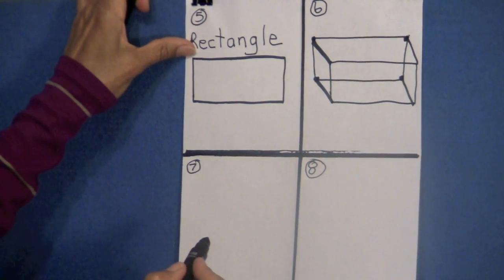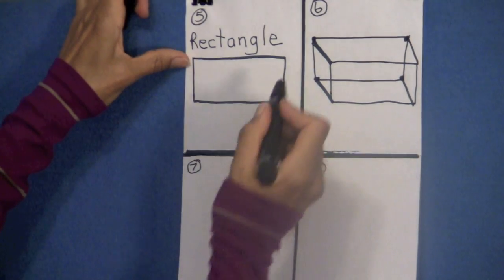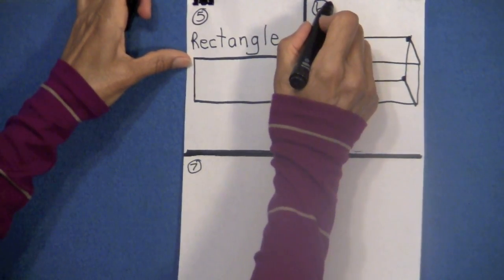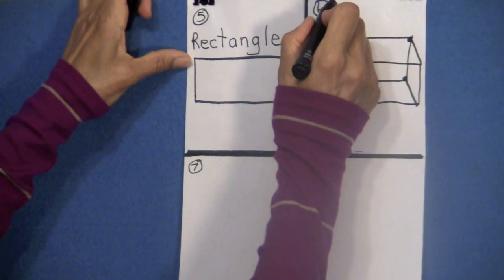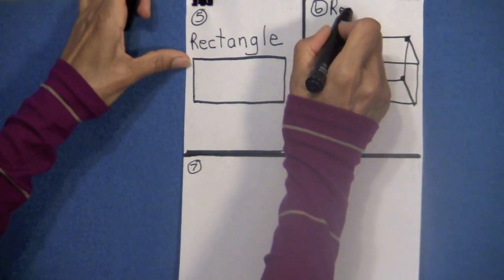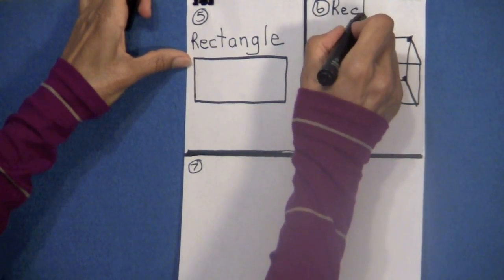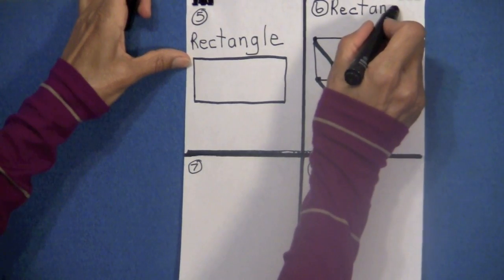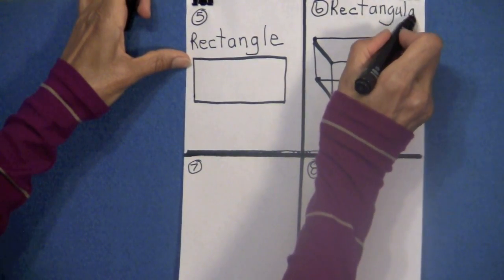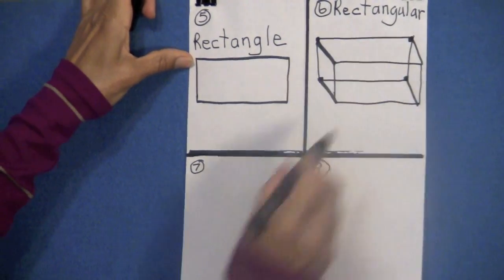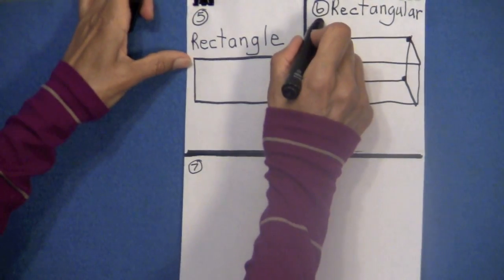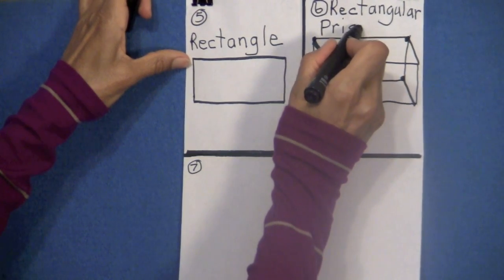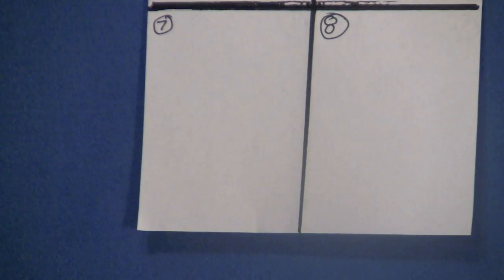Do you know the name of this shape? If you said rectangular prism, you are correct. Let's spell it. Now I want you to be writing as we spell. Capital R-E-C-T-A-N-G-U-L-A-R rectangular, prism capital P-R-I-S-M. Isn't this great fun boys and girls?